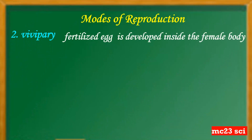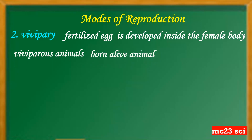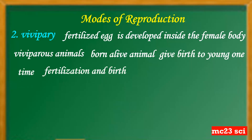Number two is viviparous, wherein the fertilized egg develops inside the female body. These animals are called viviparous animals or born-alive animals, wherein the female animal gives birth to a young one. The time from fertilization to birth is called the gestation period.